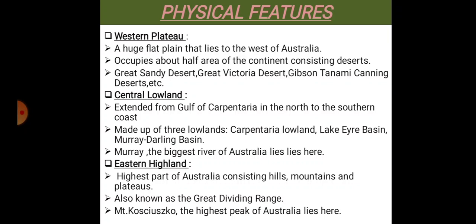The Eastern Highland is the highest part of Australia, which mainly includes hills, mountains, and plateaus. This physical feature is also known as the Great Dividing Range. The highest peak of Australia, Mount Kosciuszko, also lies in this same region.